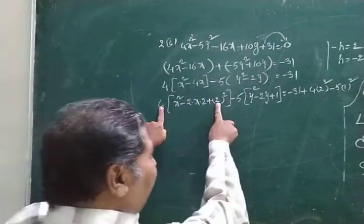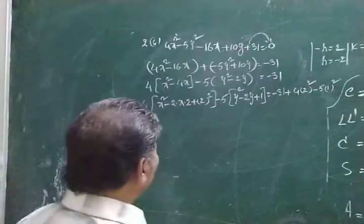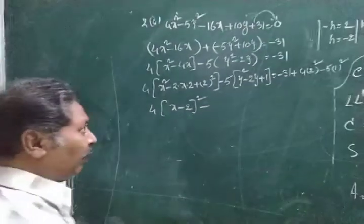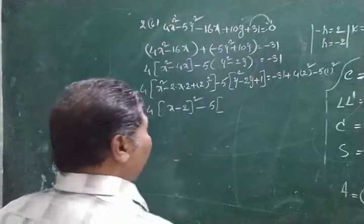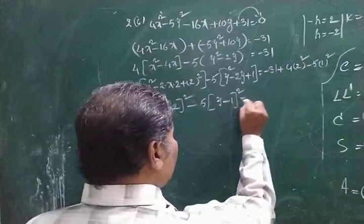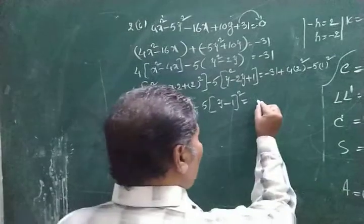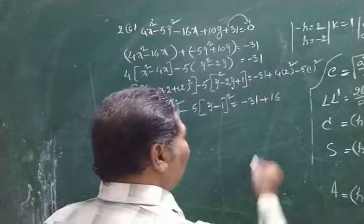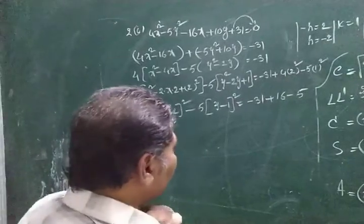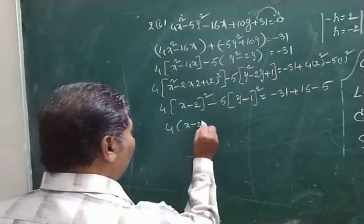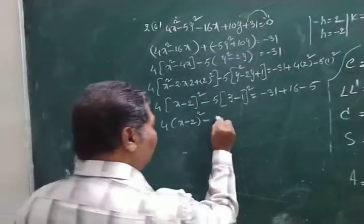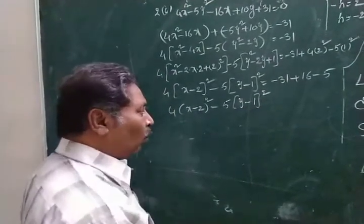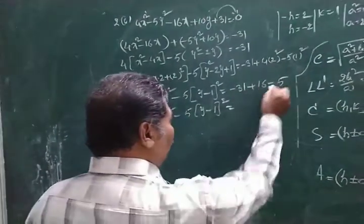So we get: 4 into x minus 2 whole squared, minus 5 into y minus 1 whole squared, equals minus 31 plus 16 minus 5, which gives minus 20.